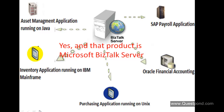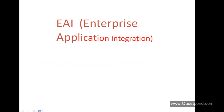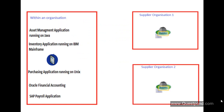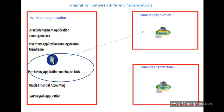Microsoft BizTalk Server helps this organization in connecting these diverse systems which are running on different technologies. This example of connecting applications within a single organization is commonly referred to as EAI — Enterprise Application Integration. We just saw an example of connecting applications and systems within an organization. What if tomorrow I want to connect to a system outside my organization and collect data from it? Yes, it is possible using Microsoft BizTalk Server.